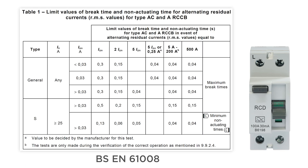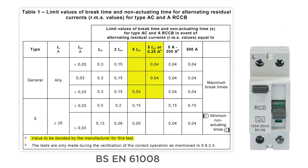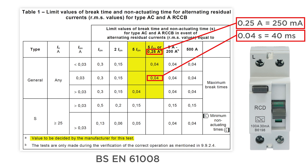To cut a long story short, all general — that is, non-time-delayed — RCDs, whether Type AC, A, F, or B, will operate at the rated current of 30 milliamps within 300 milliseconds. However, the product standard allowed manufacturers the choice to design their devices to operate within 40 milliseconds at five times the rating of the device, or at 250 milliamps. If the manufacturer chose the 250 milliamp option, this meant the device could fail the five times test.